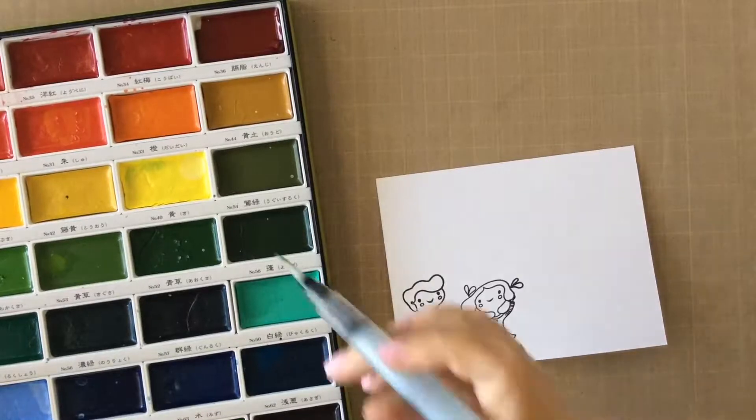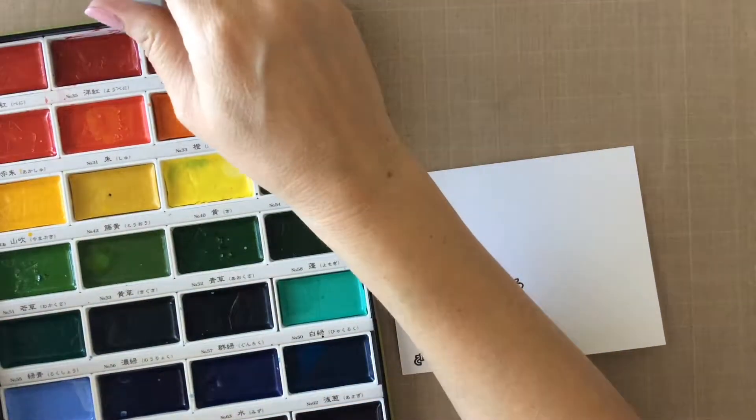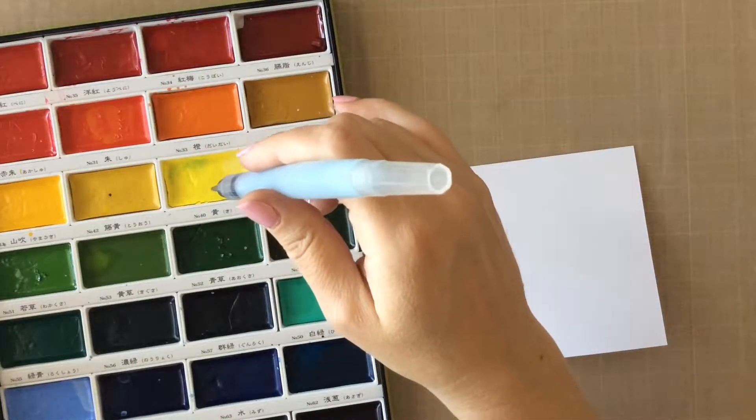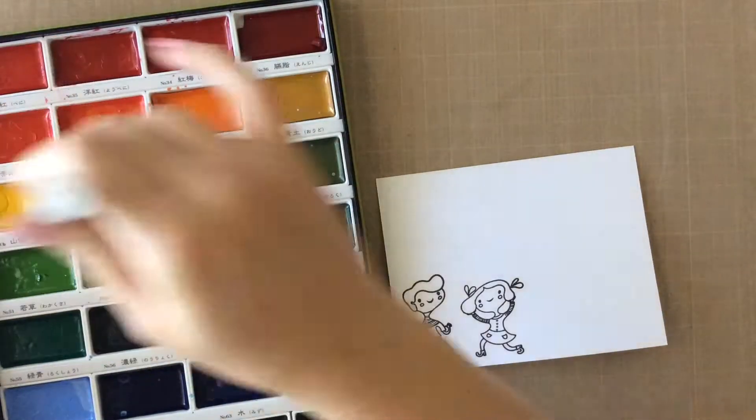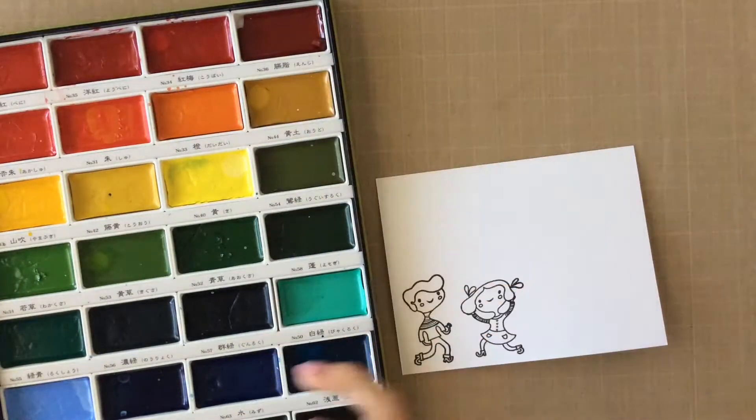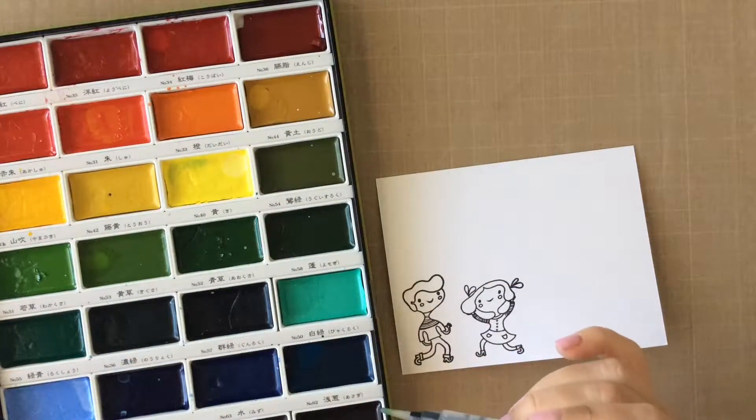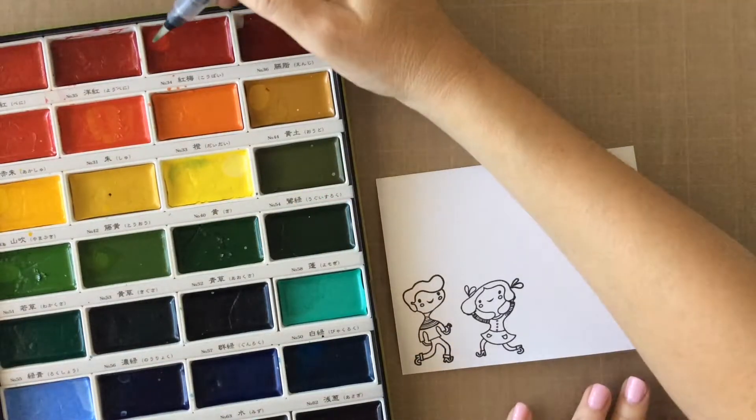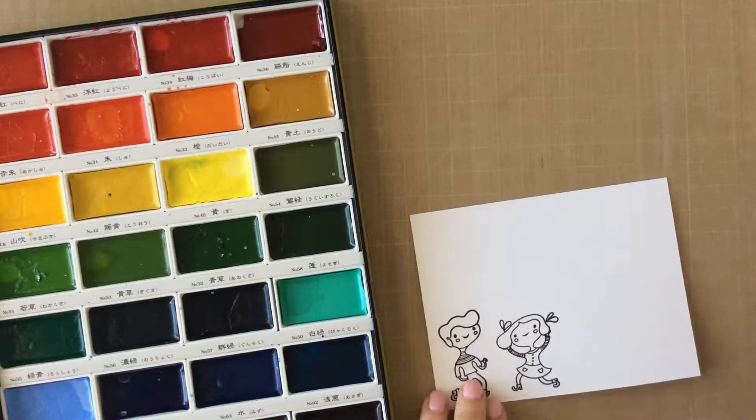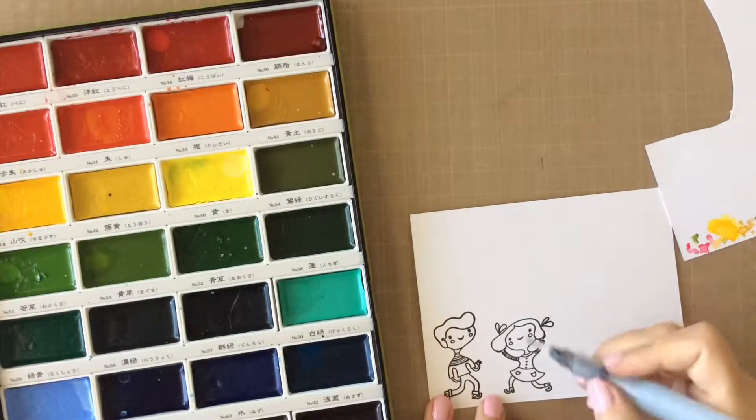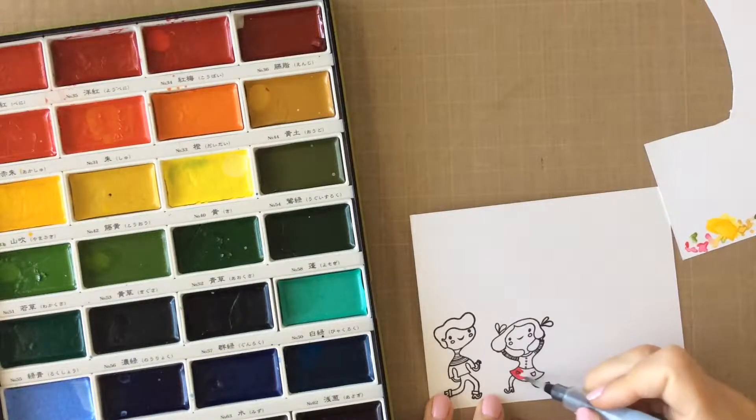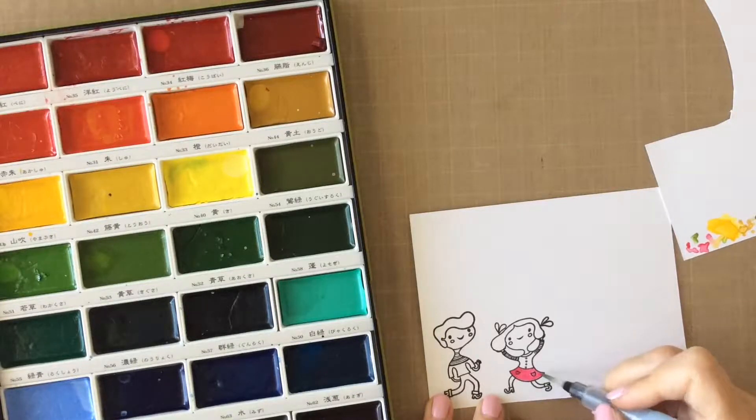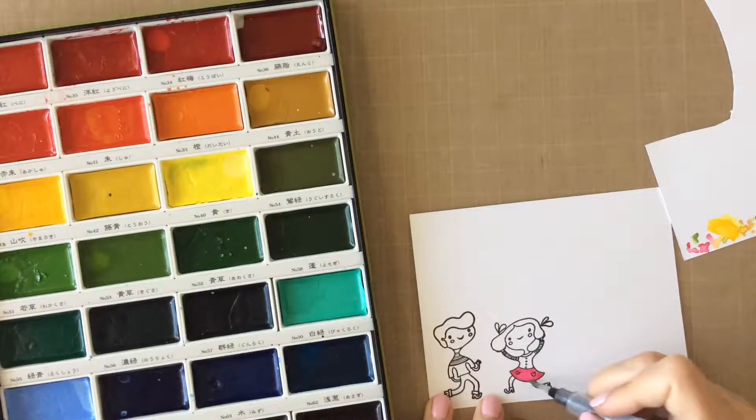For the girl, I'm going to use number 34 for her dress. So I like to put a little drop of water in the colors that I'm going to use so that it can loosen up that watercolor and get it ready for my watercoloring. So for her hair, I'm using number 43 and 44, which are a couple shades of yellow there. And then for the boy, number 66 on his pants, which is a similar color to the earth. And then 51 for his shirt, which is a green. And then for his hair, number 44 and 47. And also 47 for his shoes.